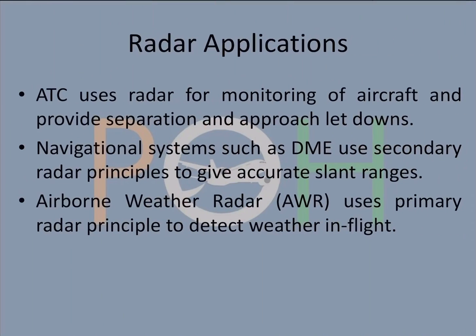For radar applications, ATC uses radar for monitoring of aircraft and providing separation and approach letdowns, like radar vectoring basically. Then you have navigational systems such as the DME, distance measuring equipment, which use secondary radar principles to give accurate slant ranges, and you have the airborne weather radar which use the primary radar principle to detect in-flight weather. It works on moisture detection. When the radar sends out a beam, it reflects back and the radar then prints it onto the screen.